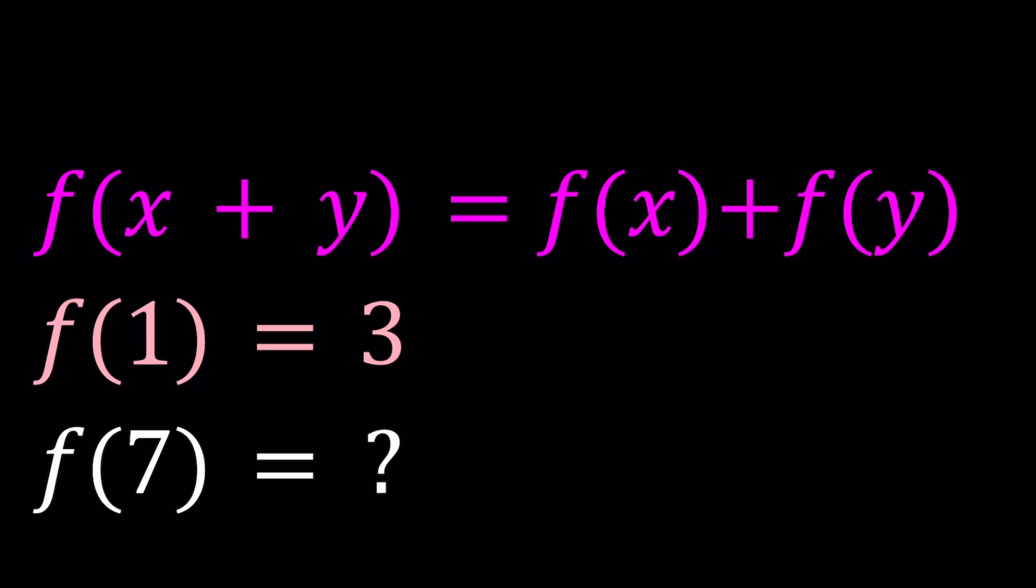So we're given a value, the value of a function at one point, and we're given a rule that kind of maps a sum to a sum. This should remind you of Cauchy's functional equations. Let's just say f is continuous in this case, and how do we solve for f of 7? I'll be presenting two methods, and let's start with the first one.